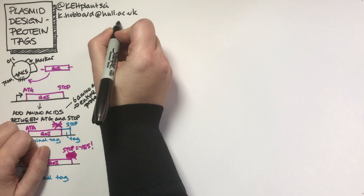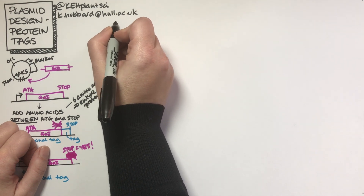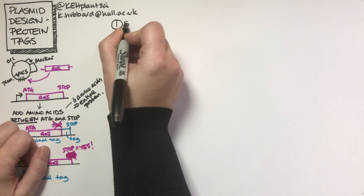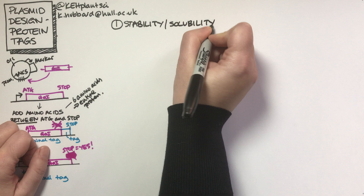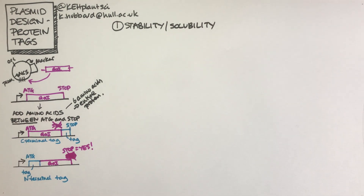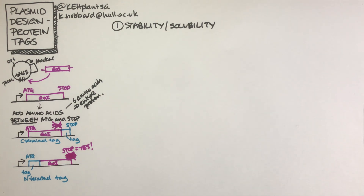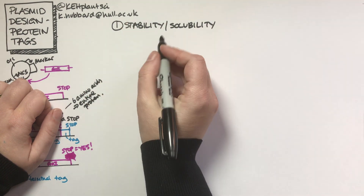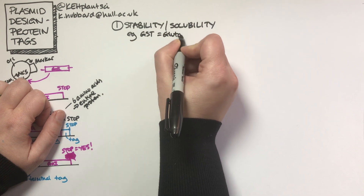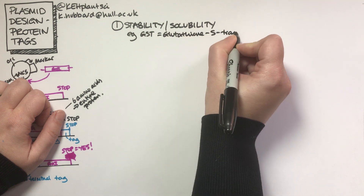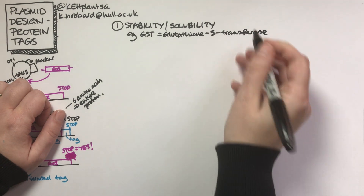There are three main reasons you might want to introduce a tag into your protein. The first is to do with either stability or solubility. It might be that, particularly if you're trying to express a prokaryotic protein in a eukaryote or vice versa, the protein doesn't fold particularly well or isn't very soluble. Or if you're making it at very high levels, the cell might detect there's too much and try to destroy it. There are some tags we can add to improve stability and solubility — for example there's a tag called GST, glutathione S-transferase, which is quite a big tag — a whole protein.